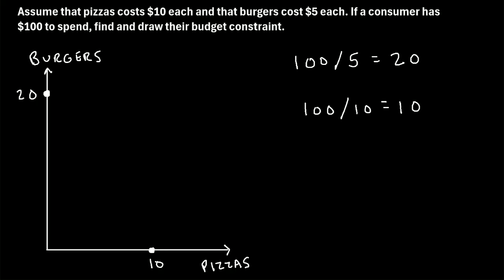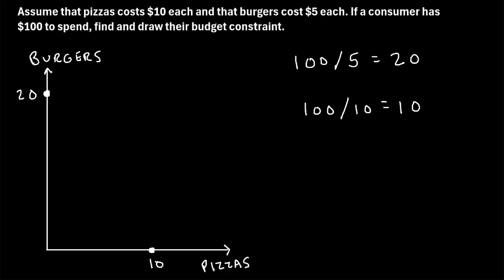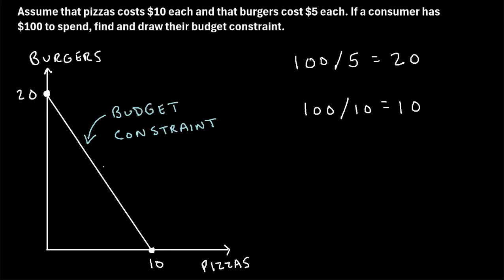Notice on the graph, when we buy 10 pizzas, the level on the burgers axis is zero — so if we buy 10 pizzas, we get to buy zero burgers. Once we've identified these two points on the graph, all we have to do is draw a line to connect them, and this line is our budget constraint.